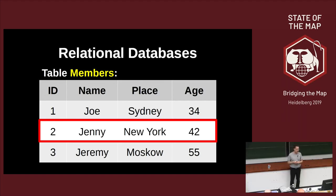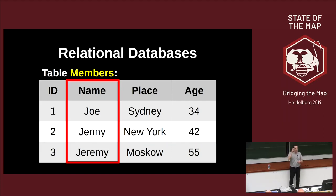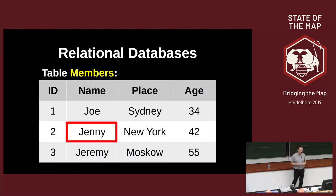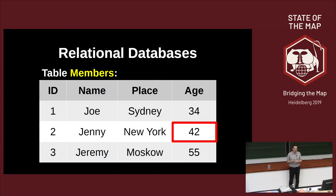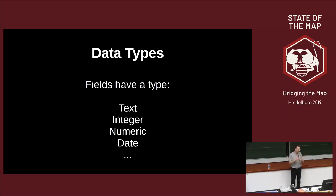You have columns that tell you what type of data there is, and then you have data sets. Here's data set number two — the member called Jenny, she lives in New York, and her age is 42. The cross-section of a column and a row gives you one piece of data, the smallest thing in the database. The name is a text string; the age is an integer. Relational databases have data types: every field has a specific data type and you have to know what it is.